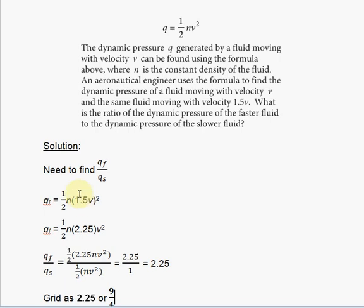Make sure that you don't put 1.5 outside the square. It must be squared because you're replacing V and V squared with 1.5V. Since 1.5V represents the greater velocity of the faster moving fluid, it must be inside the parentheses so it's also squared.